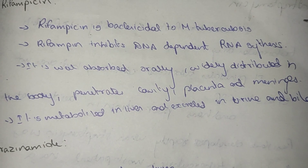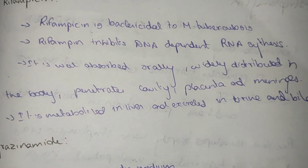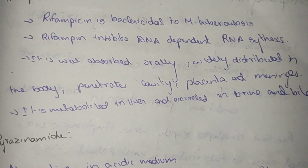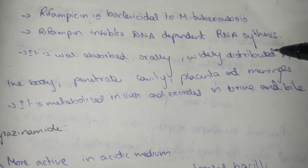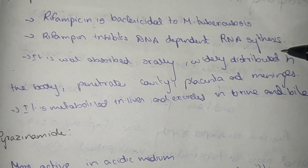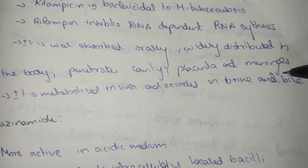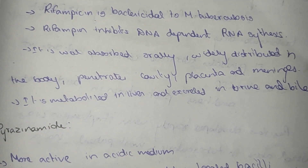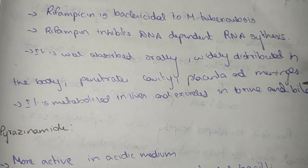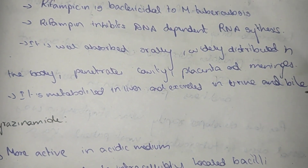Rifampicin is a bactericidal against Mycobacterium tuberculosis. Rifampicin inhibits DNA-dependent RNA synthesis. It is absorbed orally, distributed in the body, and penetrates into cavities as well as the placenta. It is metabolized in the liver and excreted in the urine and bile.